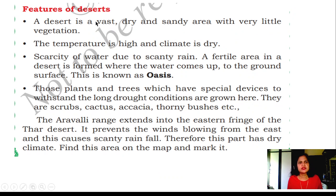Features of the deserts. Desert is a vast, dry and sandy area with very little vegetation. The temperature is high and climate is dry. The scarcity of water is due to the scanty rain. A fertile area in the desert is formed where water comes up to the ground surface — this is known as Oasis.